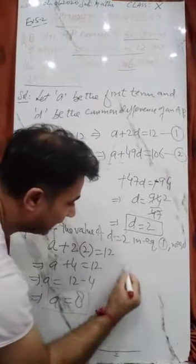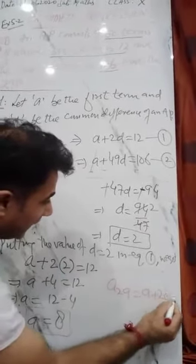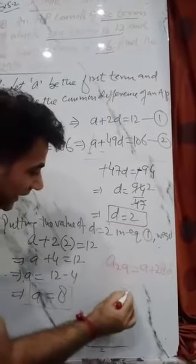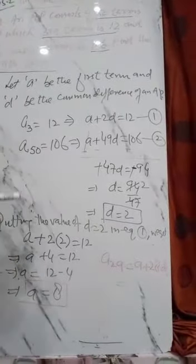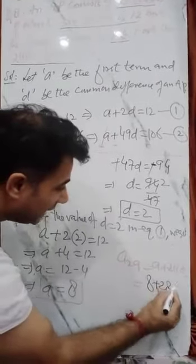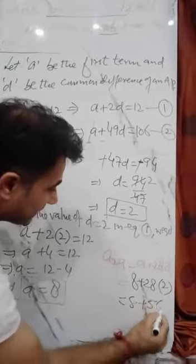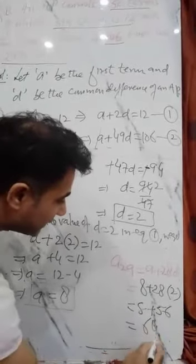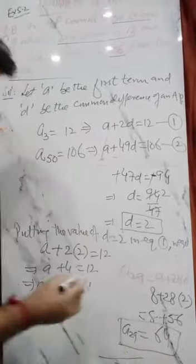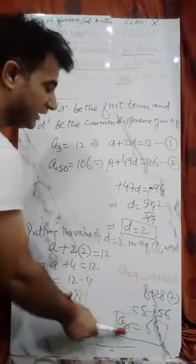a₂₉ will be equal to a + 28d. So let's put the values. a value is 8 plus 28, and d value is 2. So 8 plus 56, how much is that? 64. So the 29th term will be 64. So this is your answer, 29th term is 64.